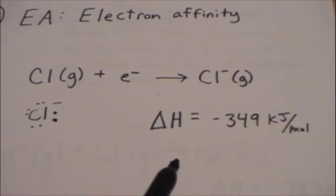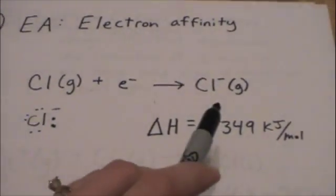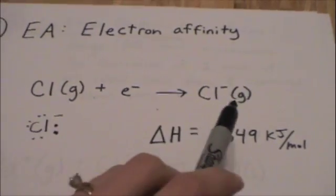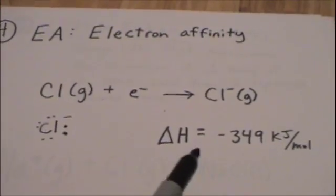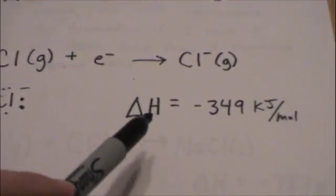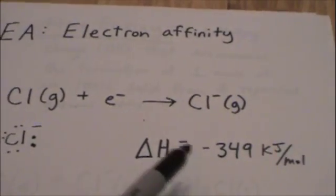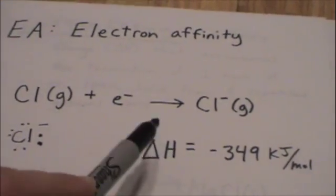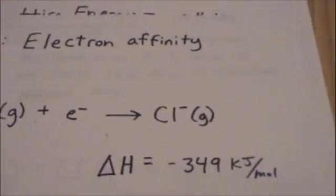It's going to release energy going from the chlorine atom to the chloride anion, and this is in the gaseous state, so we put the G there. We can look this up on a table and find the delta H from the electron affinity for chlorine is negative 349 kJ per mole.